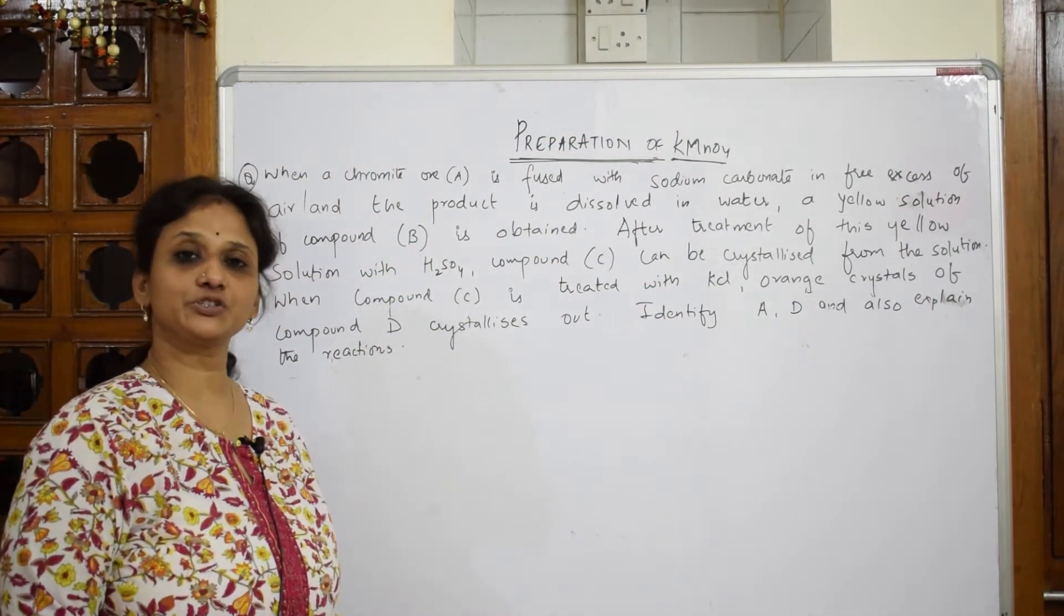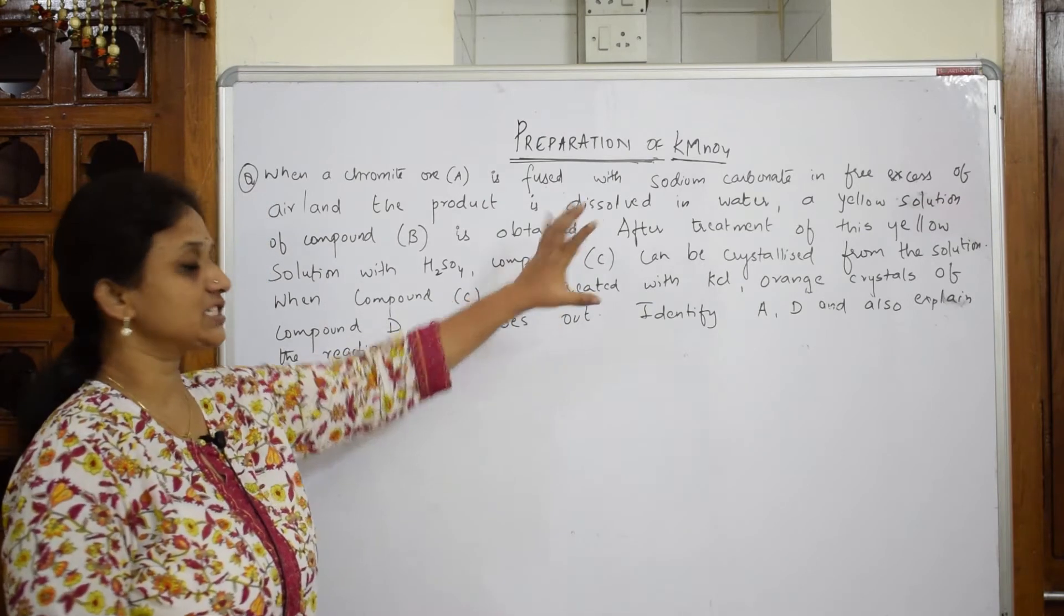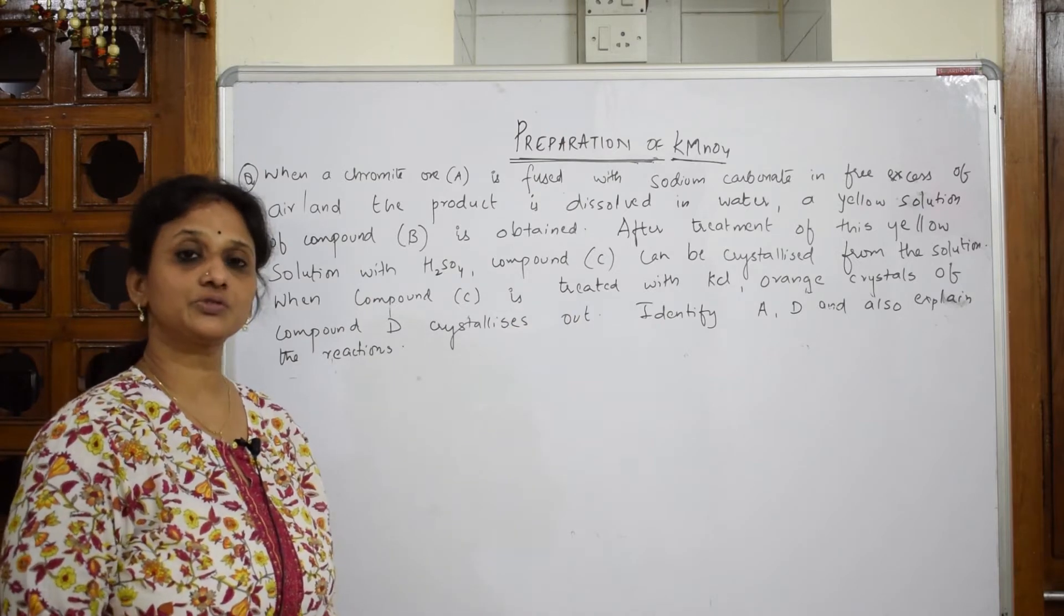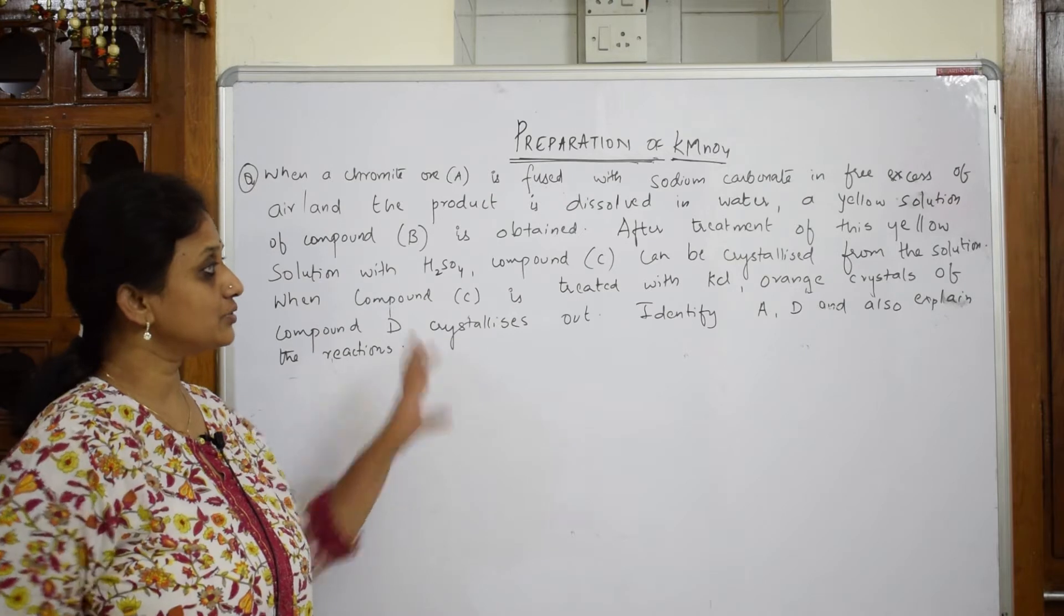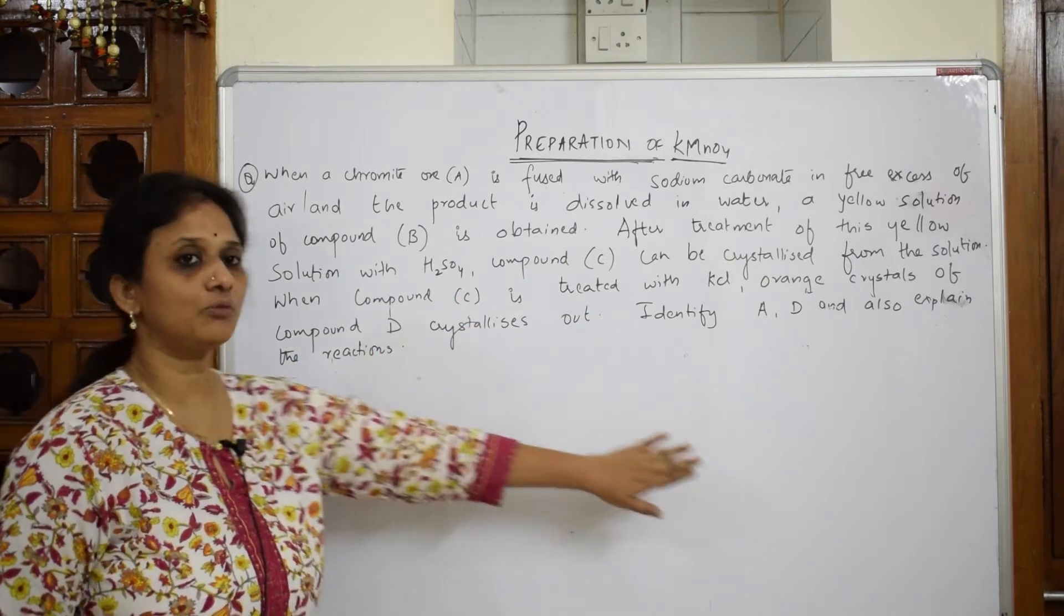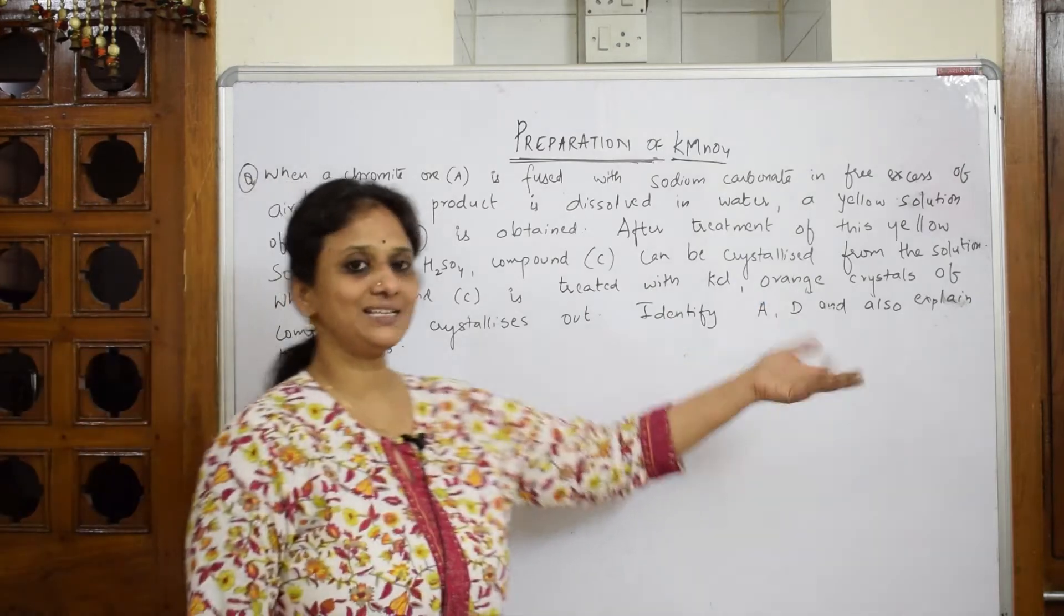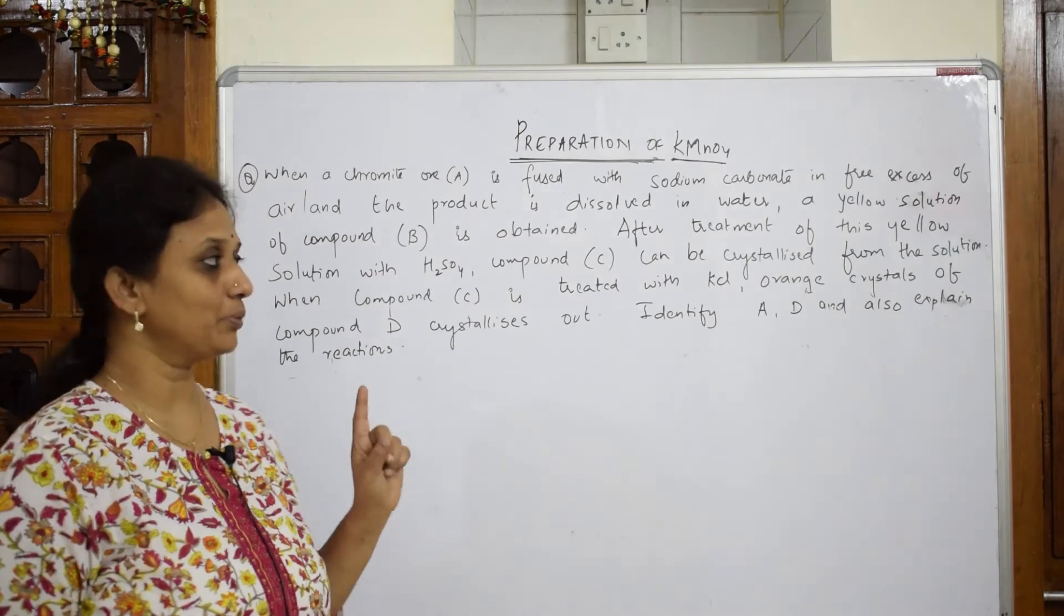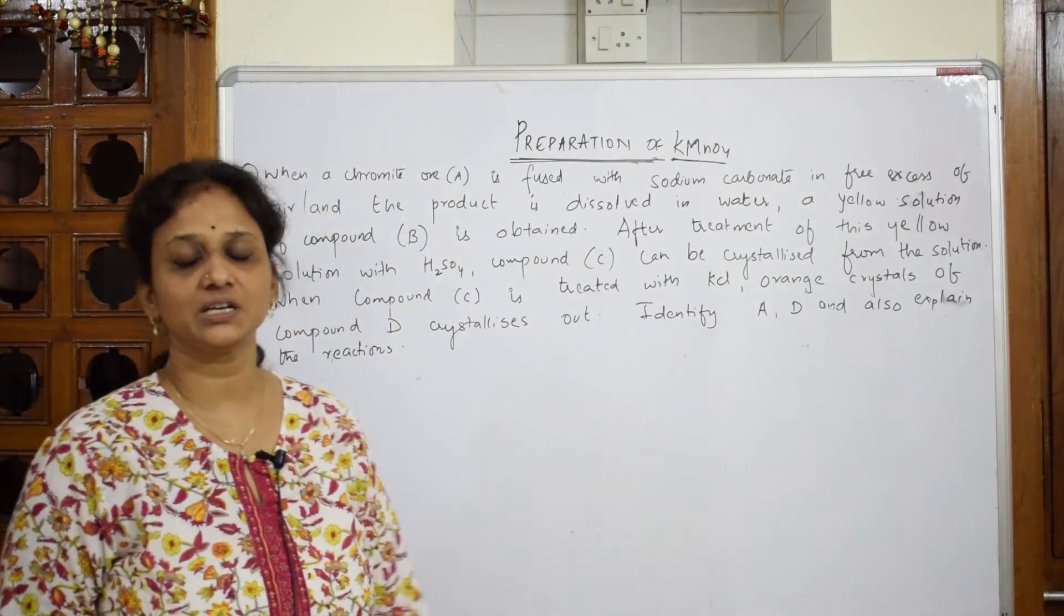Let us come back and do the preparation of potassium dichromate. When you do your preparation, such questions will be given to you in the form of a paragraph. What do they want us to do? These are called identification type questions. They want you to read the question and write in the form of equations or reactions and identify A, B, C, and D, whatever is the requirement. You have to be very careful while doing such questions. The important thing is you have to read line by line and keep noting what is given to us.